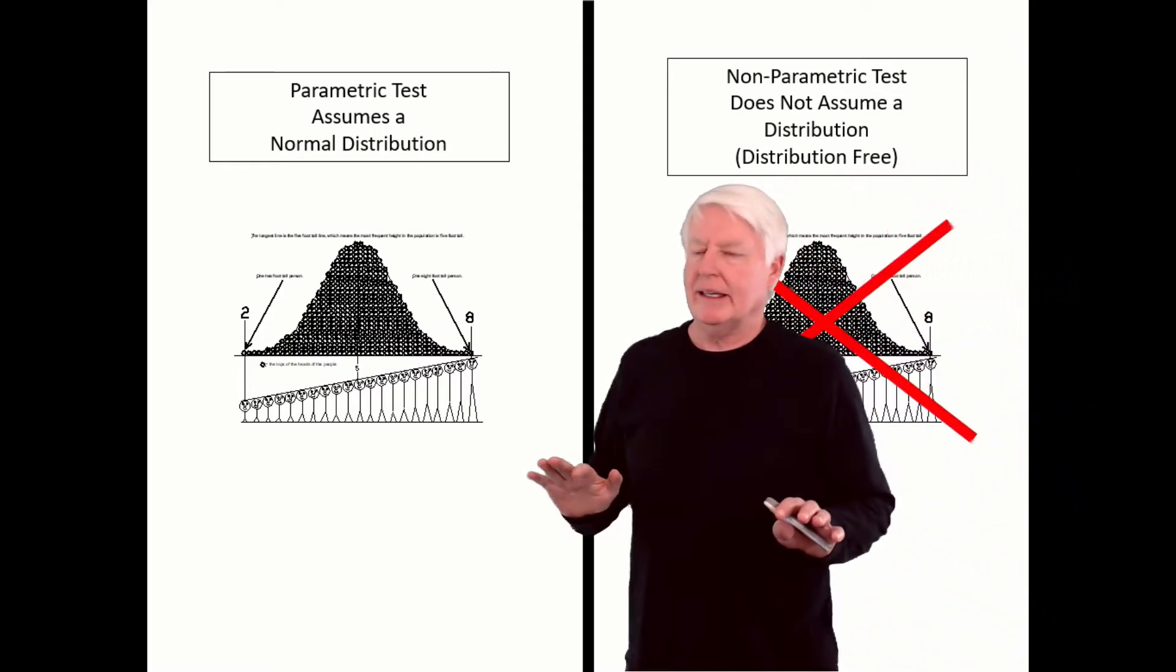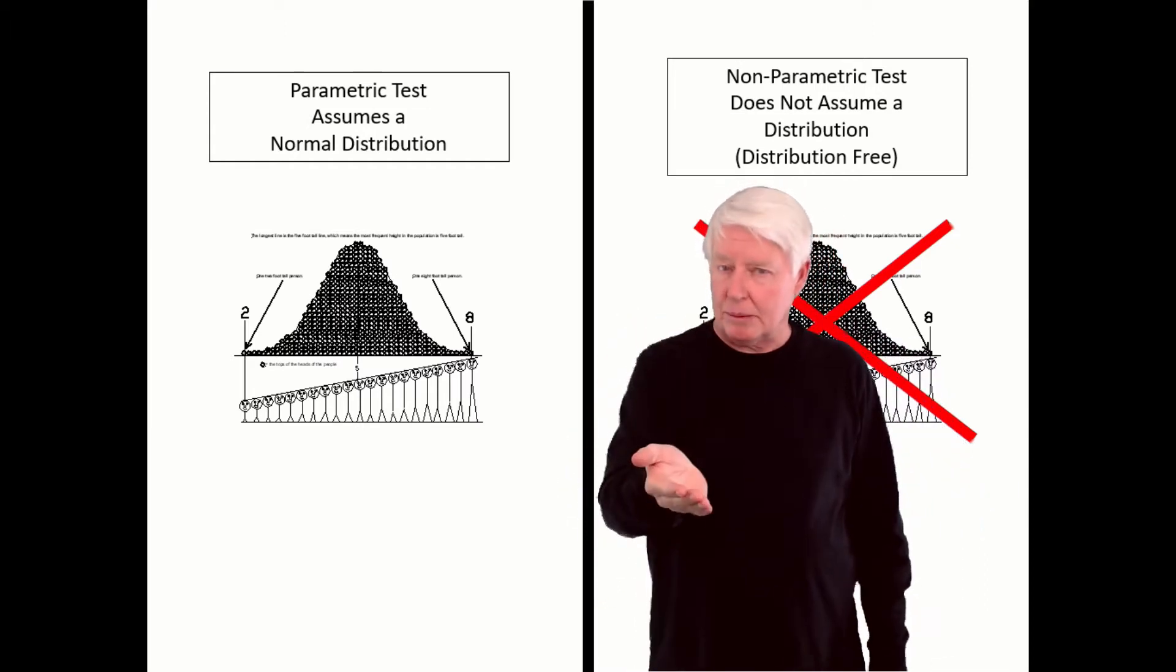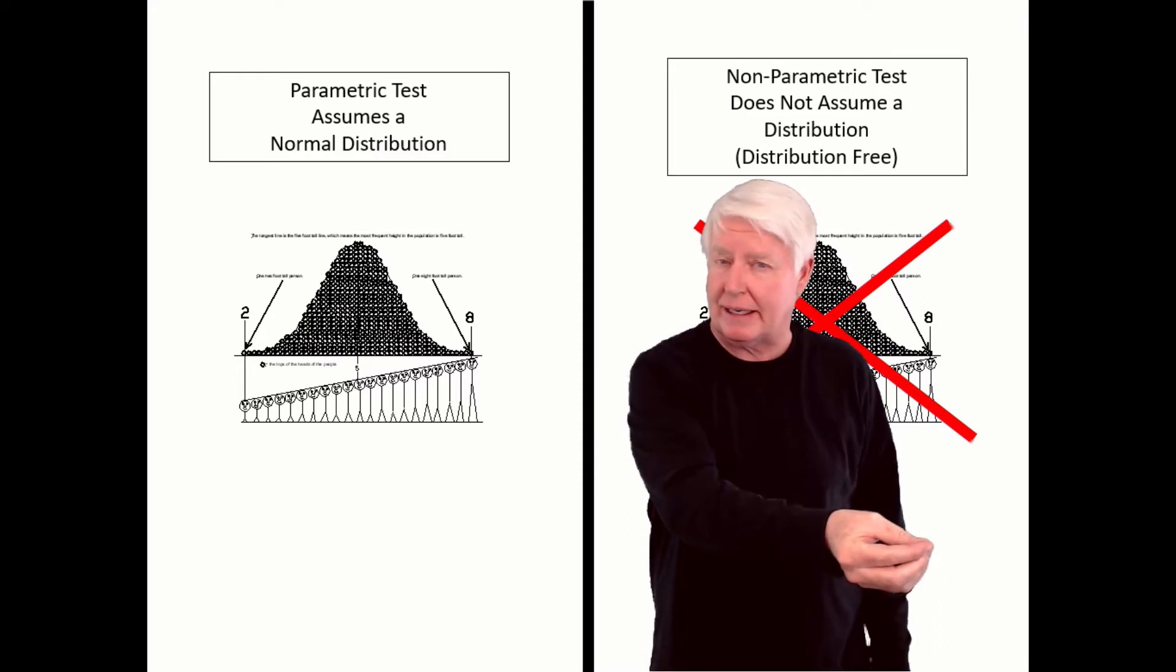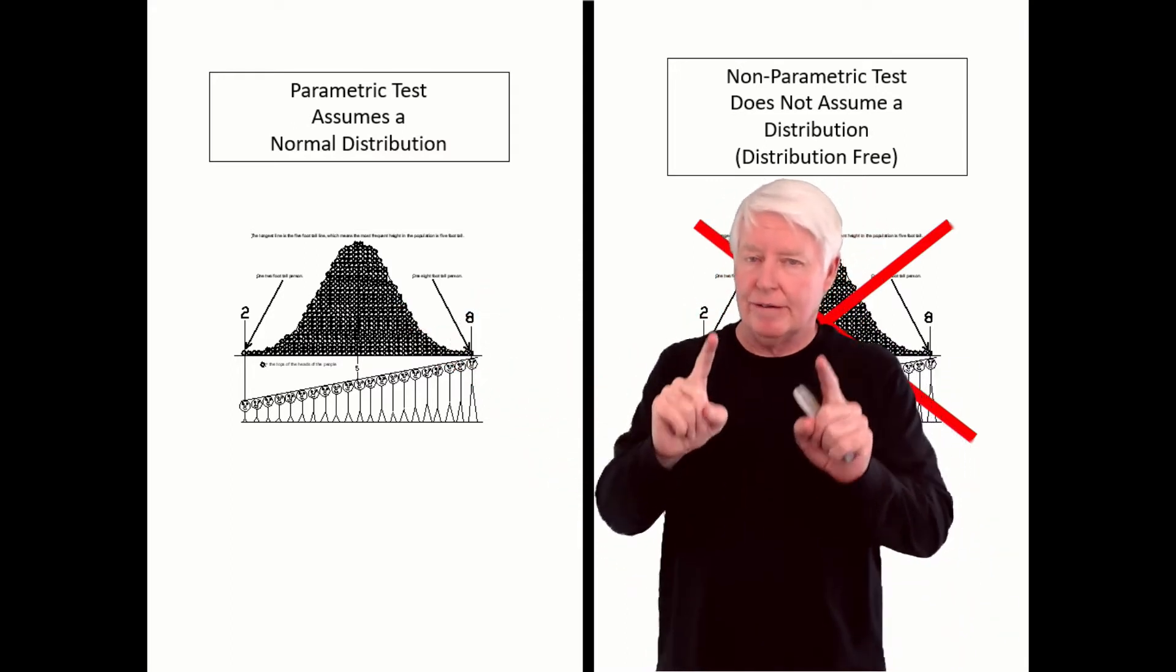Now, you must understand, with mathematics and statistics, the more predictable something is, the more powerful mathematics becomes. And a normal distribution is very, very predictable.